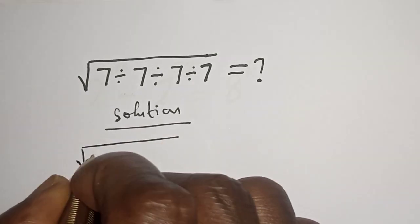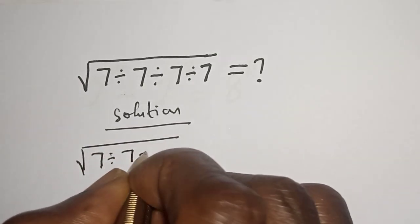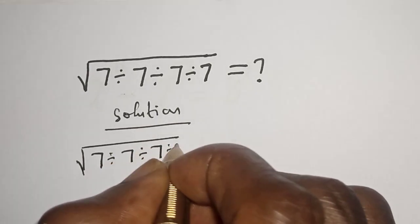Solution. We have the given equation: square root of 7 divided by 7 divided by 7 divided by 7.